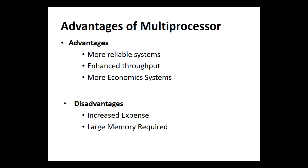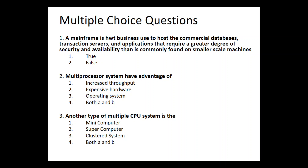To summarize, we have three kinds of systems: mainframe computers, desktop computers, and multiprocessor systems. Mainframe computers are used when you need to handle multiple users, multiple devices, and multiple applications. Desktop computers are for personal use with minimal requirements. Multiprocessor systems are used when multiple processors are needed to serve more demanding requirements.